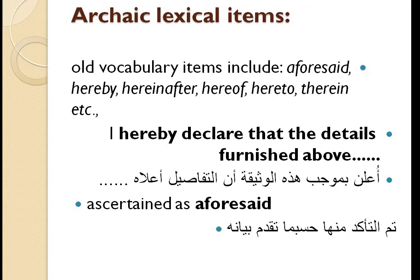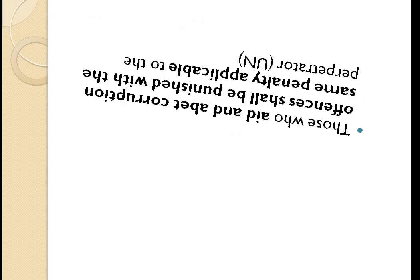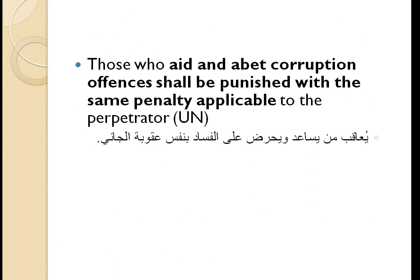Another difficulty involves word-level challenges. For example, the word 'bare' in English — consider the sentence: 'Those whose aid and abet corruption offenses shall be punished with the same penalty applicable to the bare writer.' You must pay attention to translating 'aid and abet' as a legal term. The Arabic translation is: يُعَاقَبُ مَن يُسَاعِدُ وَيُحَرِّضُ عَلَى الْفَسَادِ بِنَفْسِ عُقُوبَةِ الْجَانِي. You must also pay attention to the passive voice and this construction.